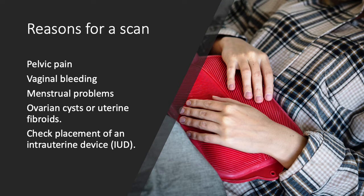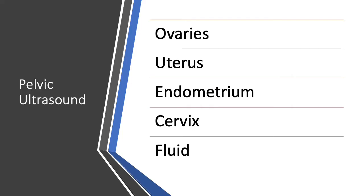We can also use ultrasound to assess the placement of intrauterine contraceptive devices, such as a Mirena coil and the copper coil. The pelvic organs that the ultrasound assesses are the ovaries, the uterus, also known as the womb, the endometrium, which is the inside lining of the uterus, the cervix, and any free fluid which may be present and a possible sign of problems.